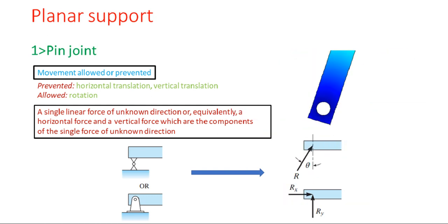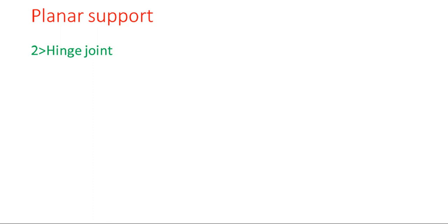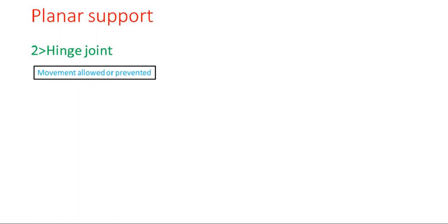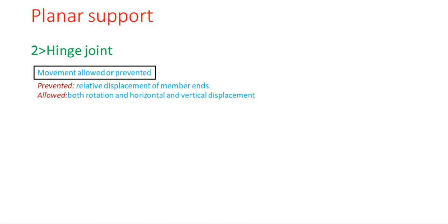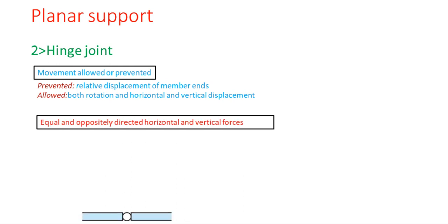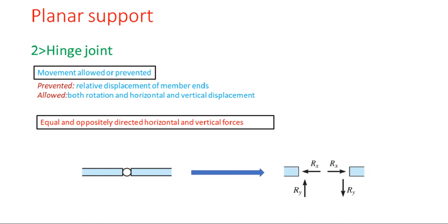The hinge joint, also called a revolute joint, carries shear and axial forces but not moments. It allows the jointed members to have different but same displacement. What is prevented is relative displacement of members, and what is allowed is rotation, horizontal, and vertical displacements. The two bars are joined by a hinge joint, and on the free body diagram you get Rx and Ry — equal and opposite horizontal and vertical forces. The simulation shows how the hinge joint behaves under loading conditions.